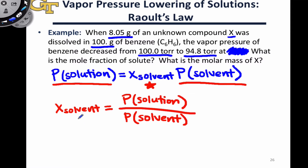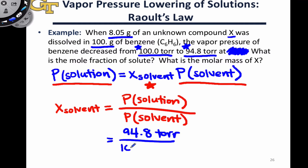Now if we look at the Raoult's Law equation in red, we see that the given vapor pressures for the pure solvent and the solution — specifically 100 torr for the pure solvent and 94.8 torr for the solution — allow us to set up this ratio. The vapor pressure of the solution, 94.8 torr, goes in the numerator, and the vapor pressure of the pure solvent, 100 torr, goes in the denominator, giving us a mole fraction of the solvent of 0.948.